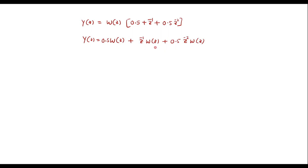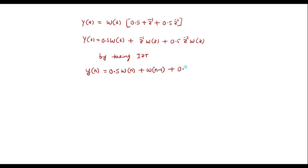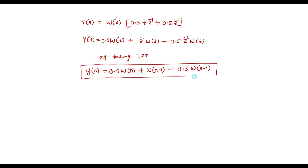Taking the inverse Z-transform of H2(Z): Y(n) equals 0.5 W(n) plus W(n minus 1) plus 0.5 W(n minus 2). This is the output of the second subsystem — call it equation B.